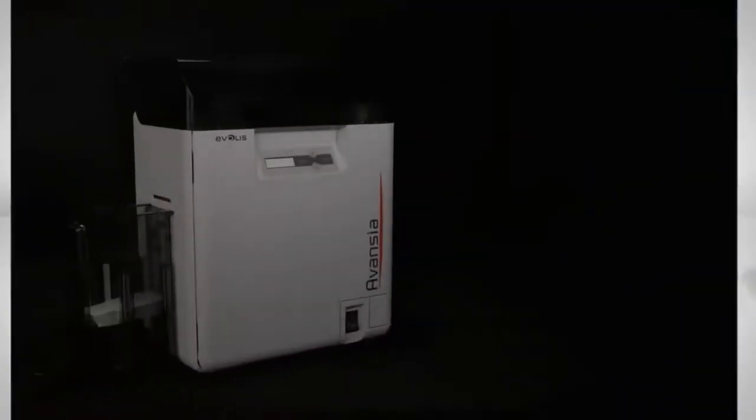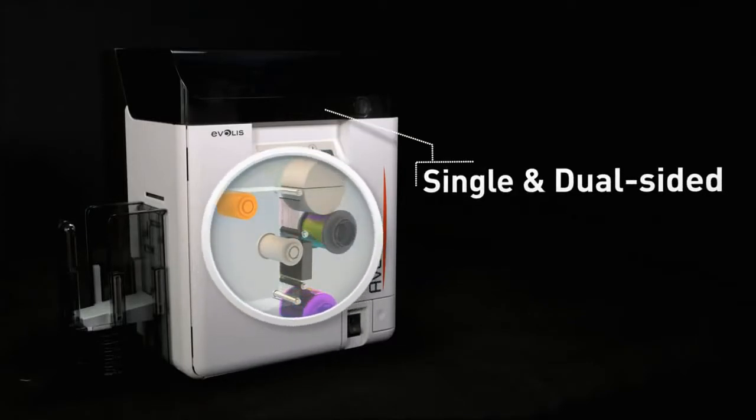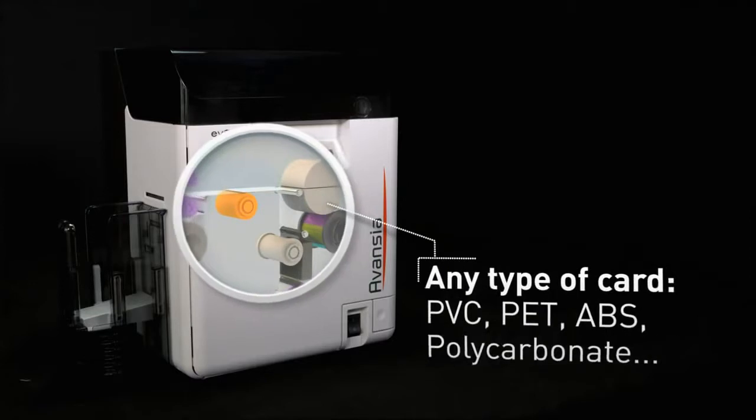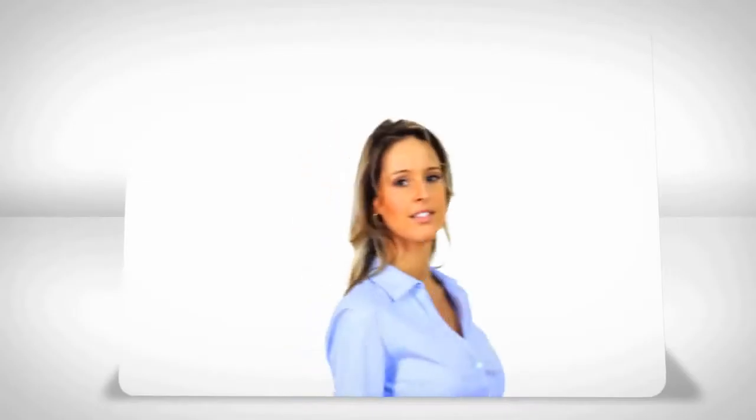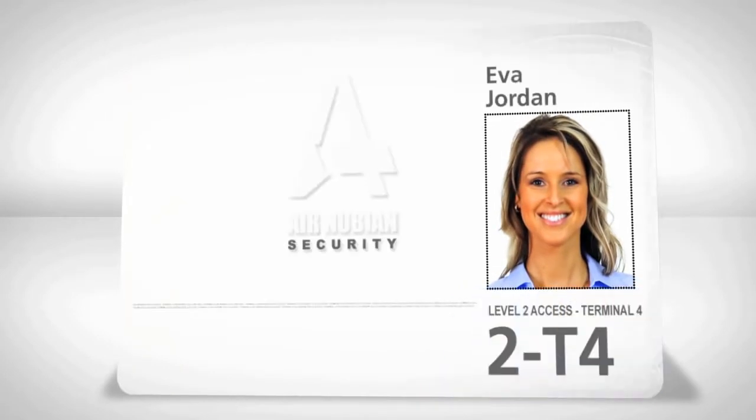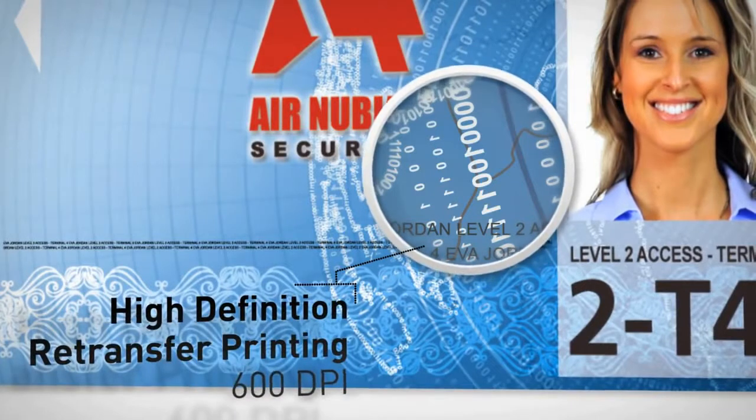Thanks to its re-transfer technology, Avancia prints high-definition single and dual-sided over-the-edge cards on any type of material. Its 600 dpi printhead provides vivid colors and real imaging for ID pictures, as well as sharp microtexts and watermarks rendering.